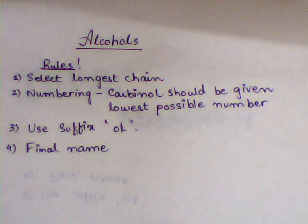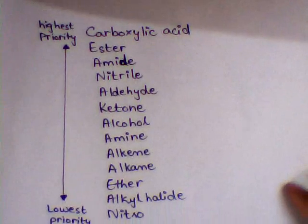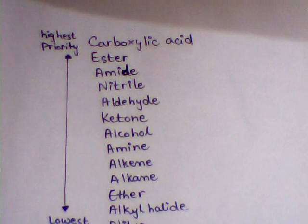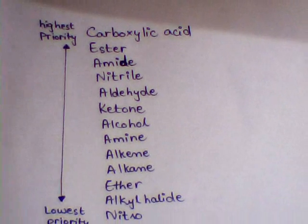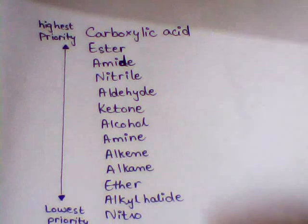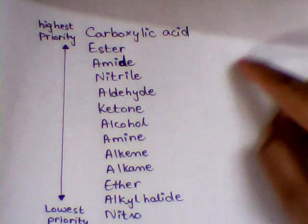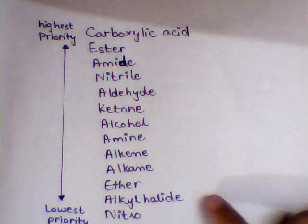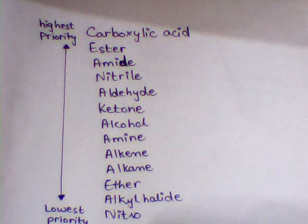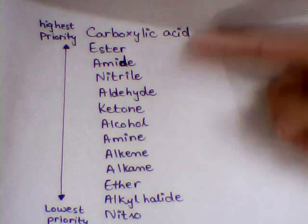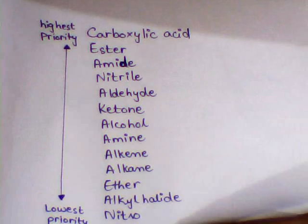Before we proceed to the practice, let's consider the priority list. While numbering in IUPAC naming, the priority list must be considered. We give highest priority to the carboxylic acid and lowest priority to the alkyl group, and the priority ranking decreases as the list goes down.